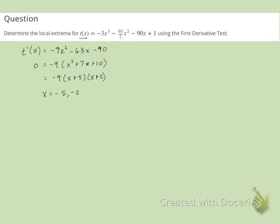So we want to determine if these critical values will give us a local min or a local max. It's not guaranteed. You can have critical values that are not local extrema. So we need to do a sign chart. So we're going to test values below negative five, between negative five and two, and then above negative two.